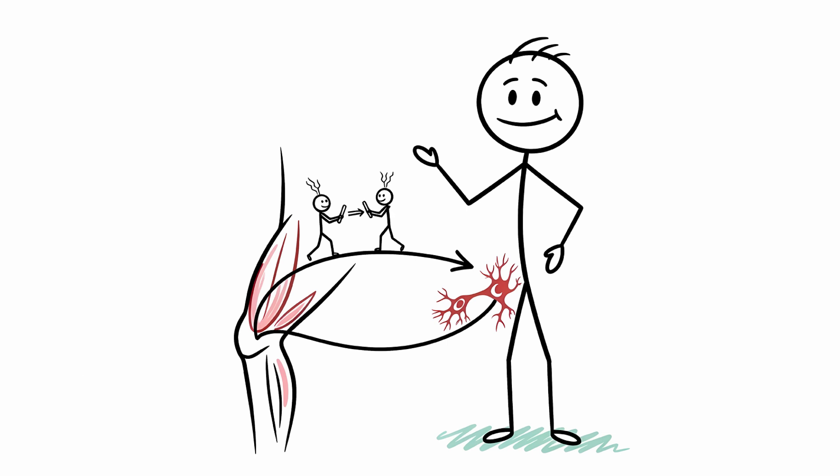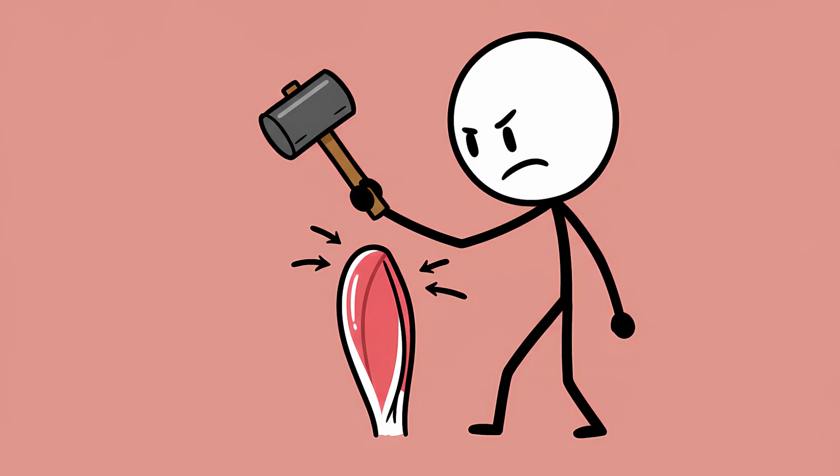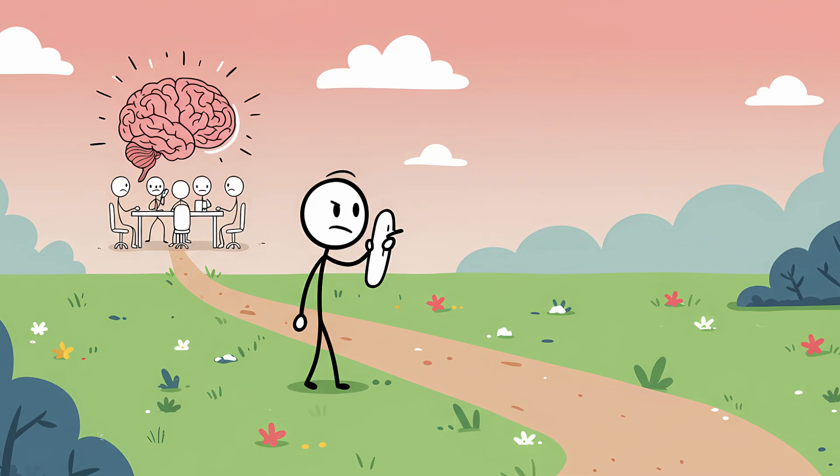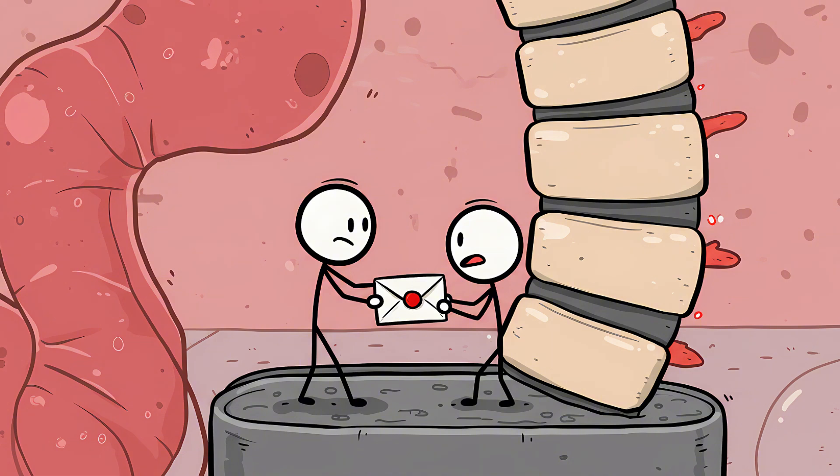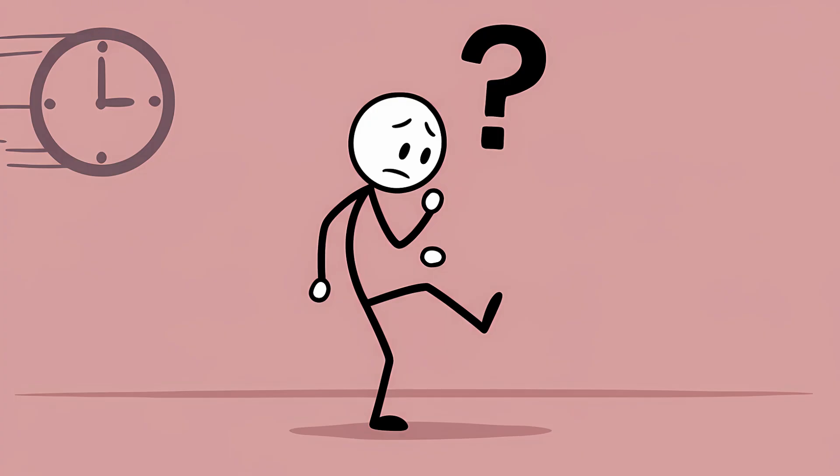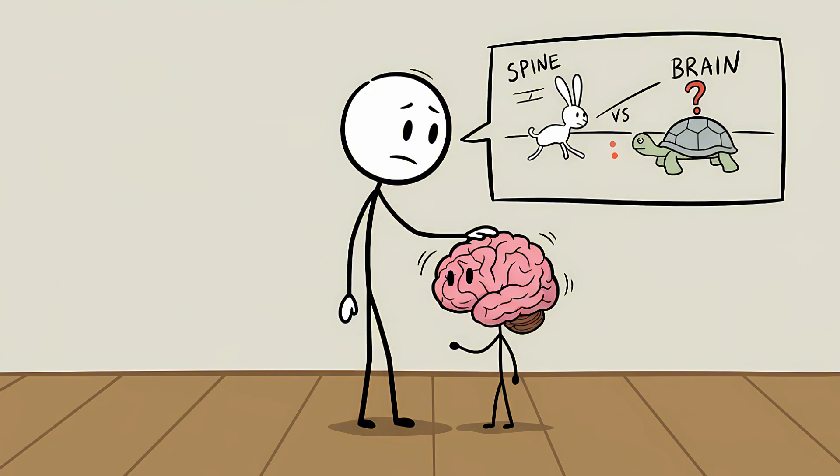This reflex is a monosynaptic reflex arc, which is a fancy way of saying it's a two-neuron shortcut that completely bypasses the conscious part of your brain. When the doctor's hammer strikes your patellar tendon, it stretches the quadriceps muscle on the front of your thigh. A sensory neuron in that muscle detects the stretch, and sends a signal screaming up a nerve fiber directly to your spinal cord. Now here's the magic. Instead of bothering to send that message all the way up to your brain for a lengthy committee meeting, the spinal cord takes matters into its own hands. The sensory neuron hands the message off directly to a motor neuron, right there in the spine. This motor neuron immediately fires a signal back down to your quadriceps, telling it to contract and kick your leg out to counteract the stretch. The entire round trip happens in milliseconds, long before your brain even gets the memo that its leg just did a dance move without permission. It's a simple, elegant system designed to maintain posture and balance, and it's a humbling reminder that sometimes your spine thinks your brain is just too slow for the important stuff.